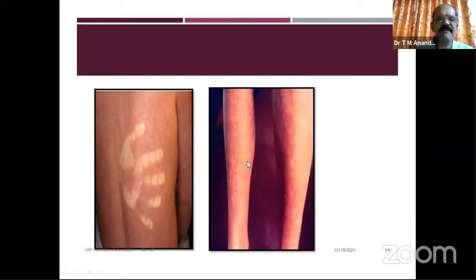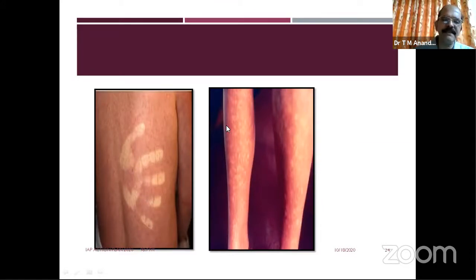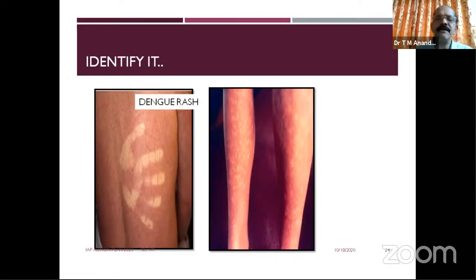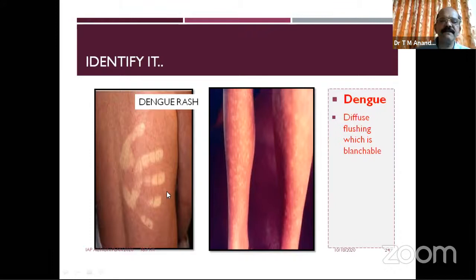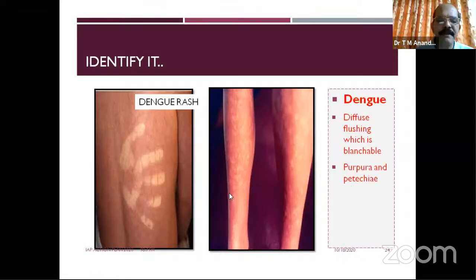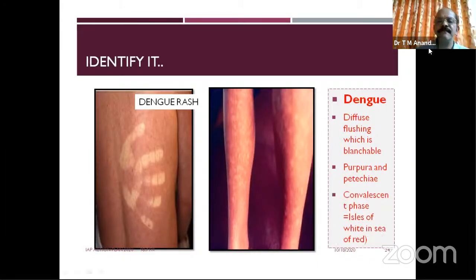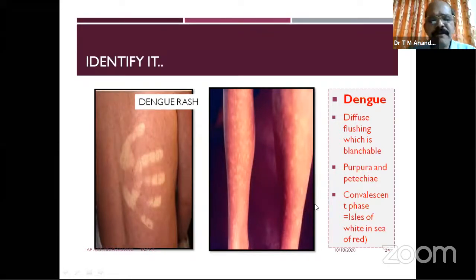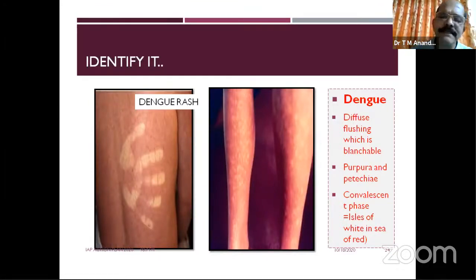The next case is now very familiar — you can see blanching of the skin. There is a white island surrounded by a red sea, which is a very characteristic rash of dengue. Different types of dengue rash: first, diffuse flushing which is blanchable; second, purpura and petechiae; third, the islands of white in a sea of red. In the majority of cases you won't get very serious disease, but dengue shock syndrome can occur. The rash can be helpful for diagnosis.